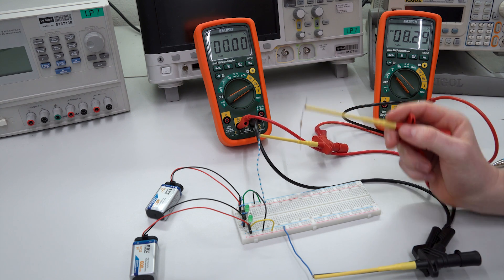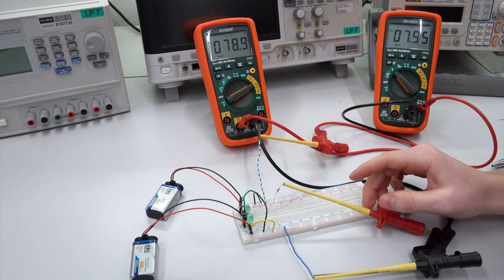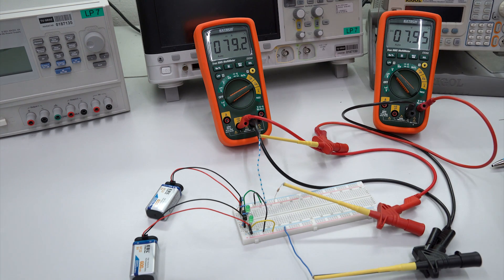So let's load the positive supply with around 100 ohm. Here we can read around 80 milliamps. The voltage dropped a little to around 8 volts. But the overcurrent protection has not triggered. So just fine.